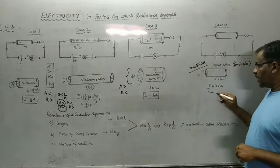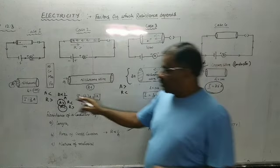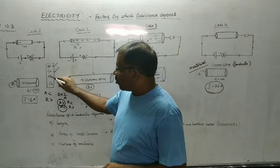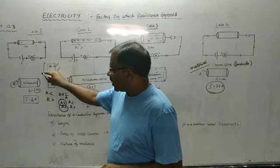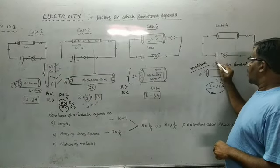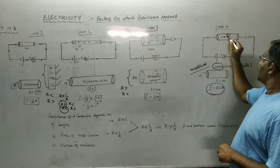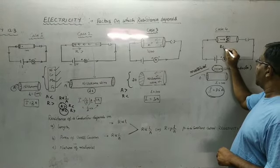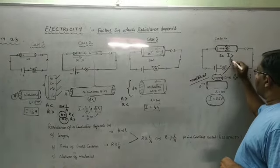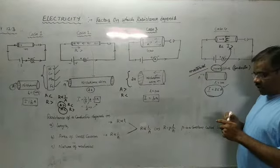The area of cross-section of nichrome and copper is the same, but the amount of current in the copper wire will be more compared to nichrome. This is because nichrome is an alloy of nickel, chromium, and magnesium, and alloys offer greater resistance than a conductor. Copper wire, being a conductor, offers less resistance to the flow of current, so the current in the circuit will be more — because copper is a very good conductor of electricity, we observe maximum current flowing in the circuit.